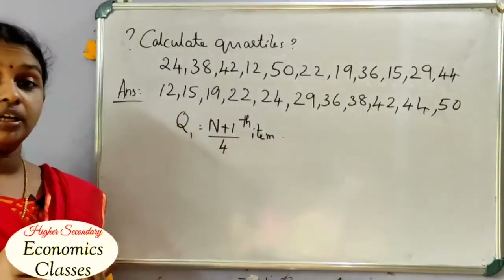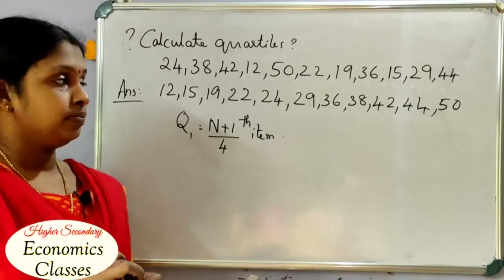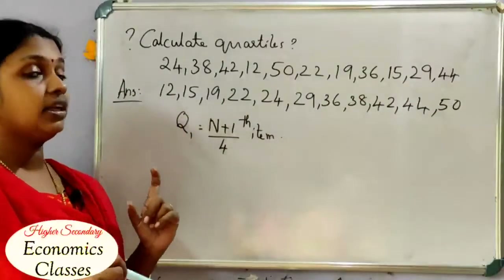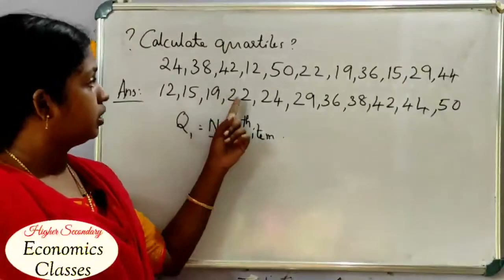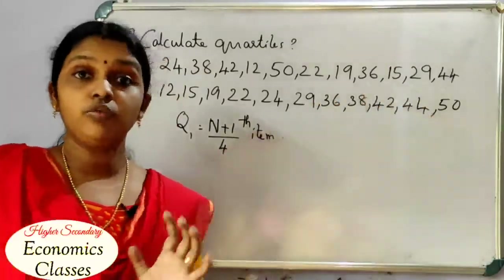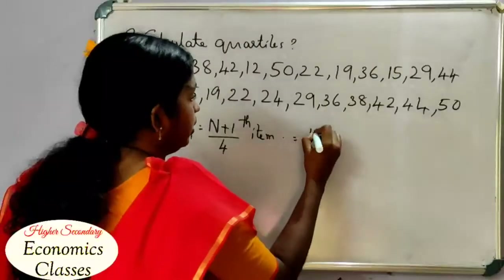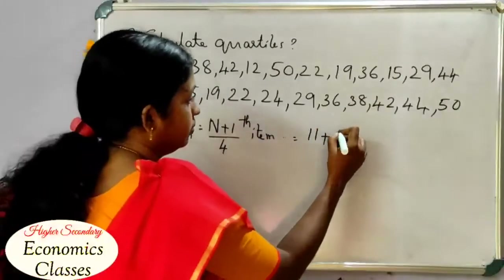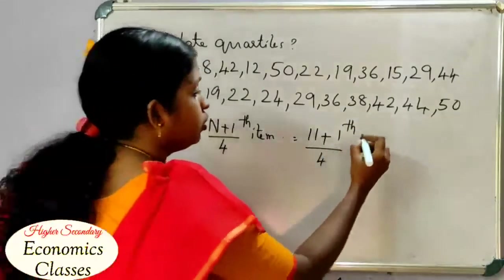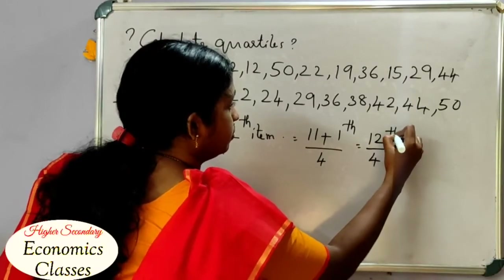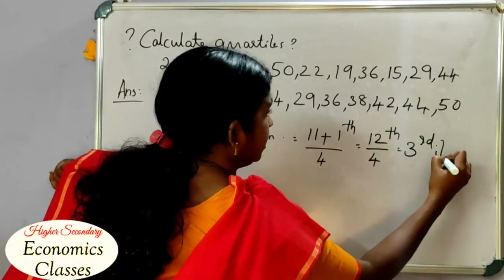In the individual series, the number of items — that means the number of x values. We count: 1, 2, 3, 4... so N = 11. Therefore, (N+1)/4 = (11+1)/4 = 12/4 = 3. So Q1 is the 3rd item.